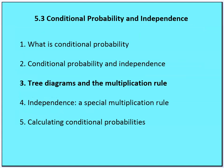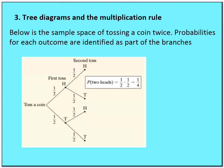Third topic: tree diagrams and the multiplication rule. Below is the sample space of tossing a coin twice — heads (H) and tails (T), each with probability one half. The tree diagram shows that to find the probability of two heads, we multiply: one half times one half equals one fourth. This is the multiplication rule in action.